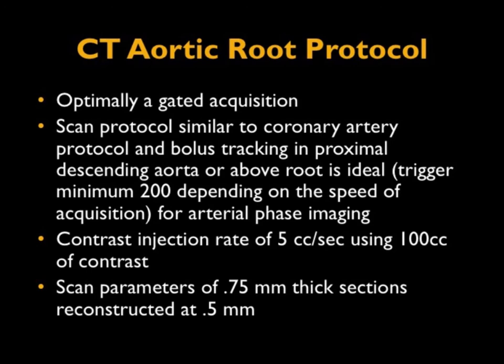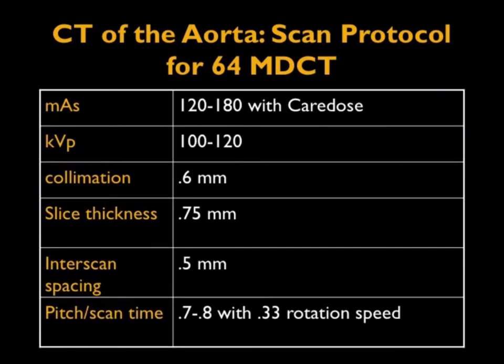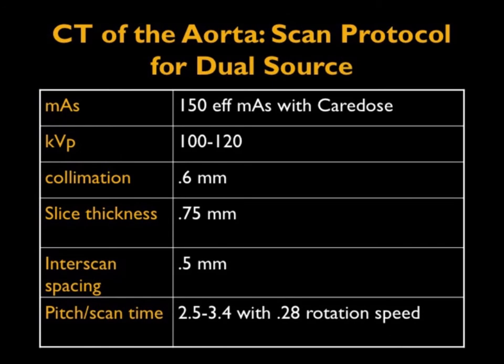In order to be good at defining complications, you have to have good protocols. When you want to look at the aortic root, you need a gated acquisition — the protocol is very similar to what you'd do for a coronary artery. You can use bolus tracking, triggering off a preset value, or timing, though timing on a preset value can be tricky, particularly in older patients with variable cardiac output. We typically inject five cc's per second, about 100 cc's of contrast, and use very thin sections — 0.75 millimeters by 0.5.